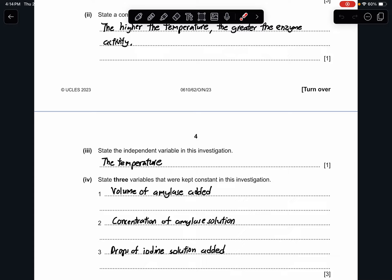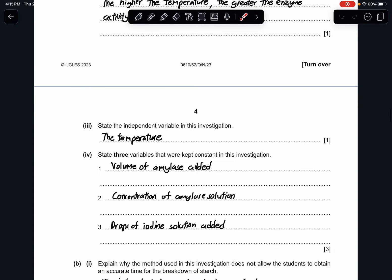Part 3, state the independent variable in this investigation. This will be the temperature. Part 4, state 3 variables that will be kept constant in this investigation. Number 1 is the volume of amylase added. Second is the concentration of amylase solution. And the last one will be the drops of iodine solution added.